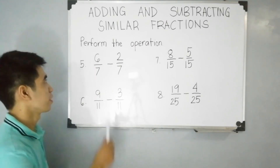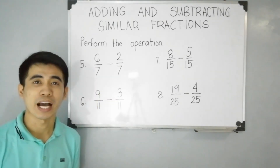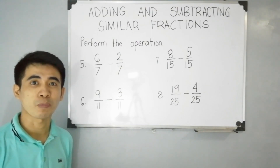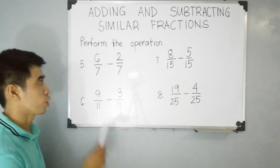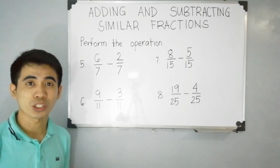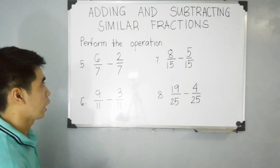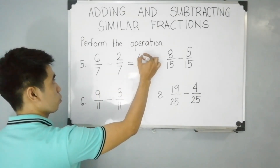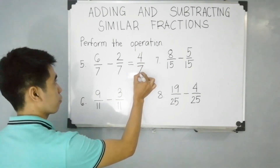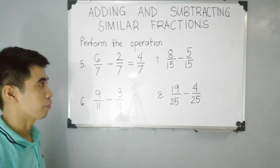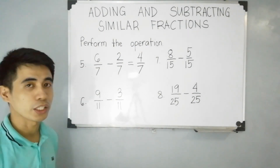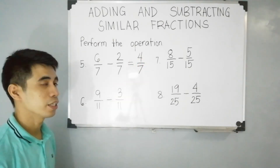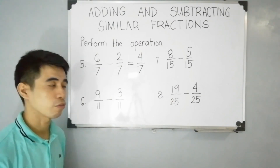Let us have item number 5: 6 over 7 minus 2 over 7. As you can see, the operation is subtraction. But take note — adding similar fractions is the same process as subtracting similar fractions. We just add or subtract the numerators and copy the denominator. So, 6 minus 2 is equal to 4. Then copy 7 since they have the same denominators. Since 4 and 7 do not have any common factor aside from 1, therefore 4 over 7 is in simplest form.